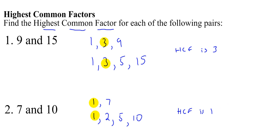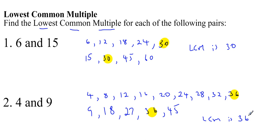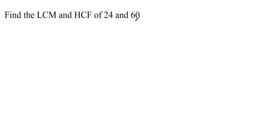Quick recap: we looked at finding the highest common factor of a pair of numbers by listing the factors of each number, then finding the highest number that's in both lists. We also looked at the lowest common multiple by listing the multiples of each number — the first number common to both lists gives us the lowest common multiple. That method is really good for quite small numbers like these. However, if you get some larger numbers like 24 and 60, there is a more efficient way of finding the LCM and HCF. Having said that, the previous method would still work.